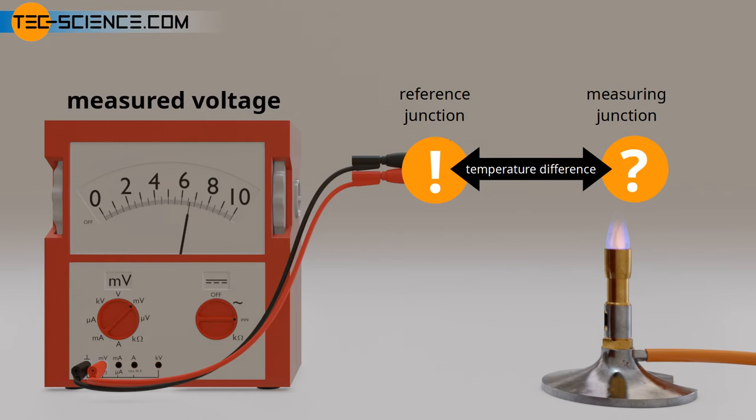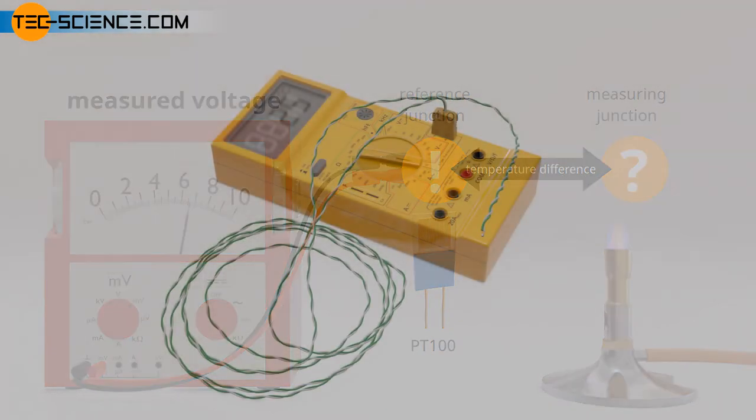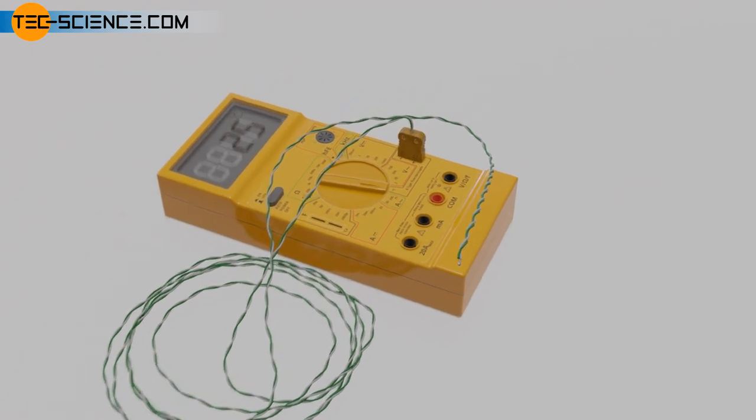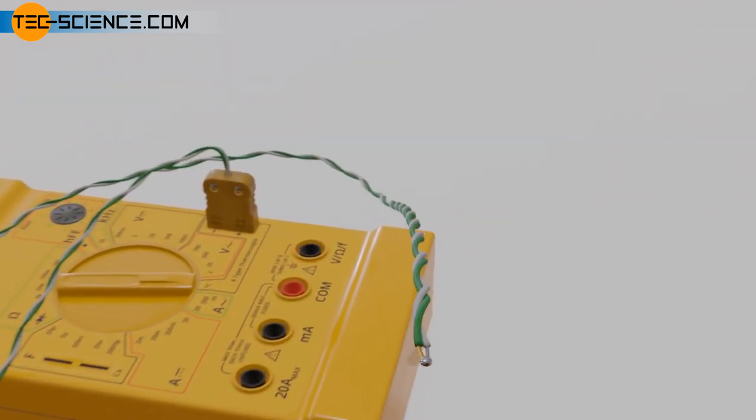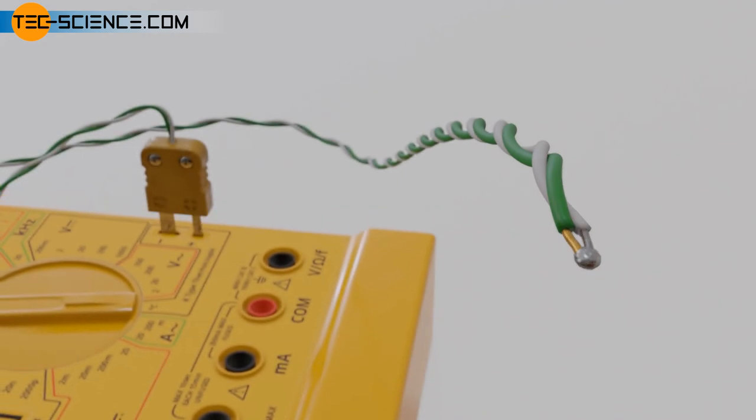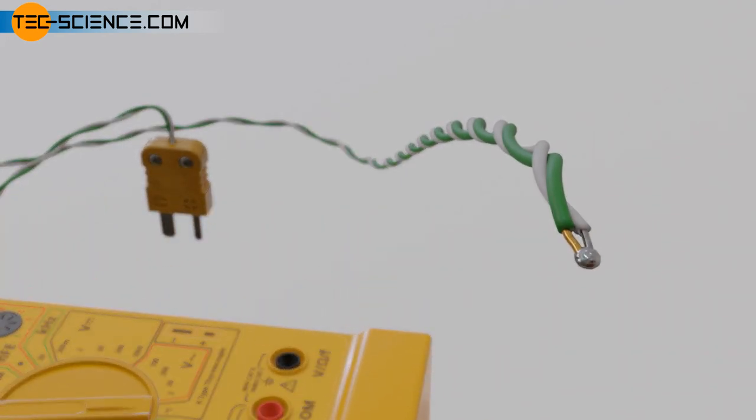The cold junction temperature can, for example, be determined with a PT100, whose electrical signal can then be processed directly with the thermoelectric voltage in order to output the temperature at the measuring point. The cold junction temperature sensor is usually located inside the housing of the measuring instrument. The actual thermocouple is then connected to the measuring device via a plug-in connection.